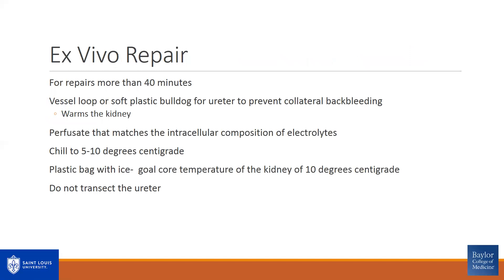Ex vivo repairs are reserved for repairs I think are going to take longer than 40 minutes of warm ischemia time. Keys to the ex vivo repair: use a vessel loop or soft plastic bulldog on the ureter, which you preserve — this prevents collateral back bleeding from small ureteral branches that feed back into the renal artery; if you don't clamp these, they'll reperfuse and warm the kidney. I do this with my transplant colleagues using a perfusate that matches the intracellular composition of electrolytes. Chill to about 5 to 10 degrees centigrade using a plastic bag with ice to achieve the goal core temperature of the kidney.